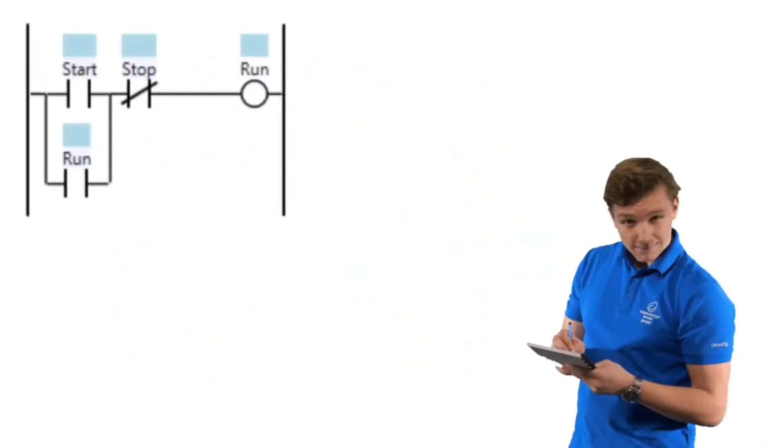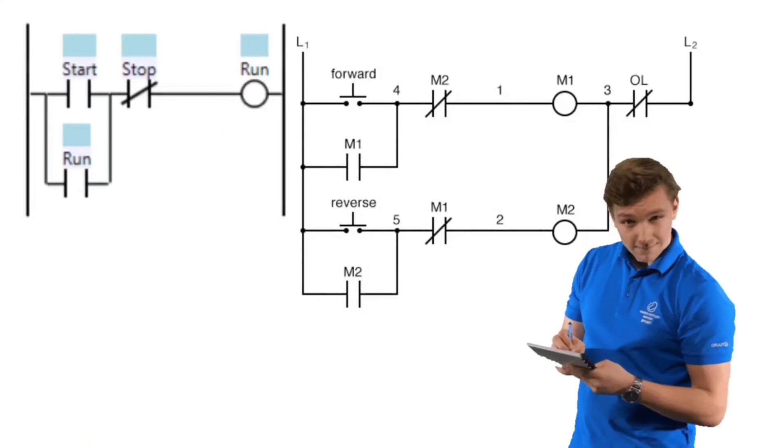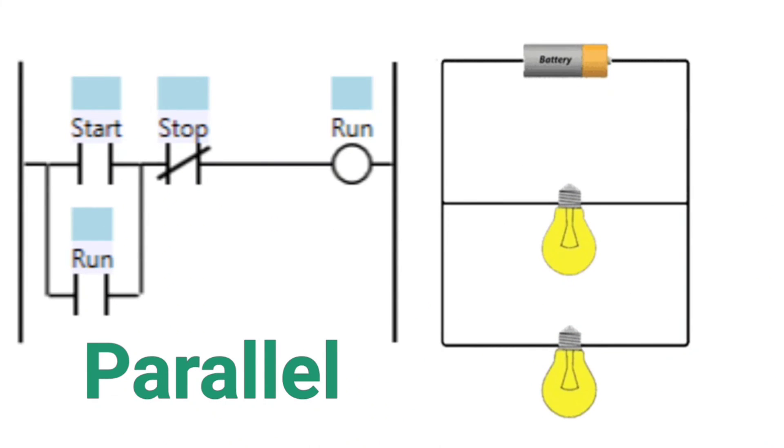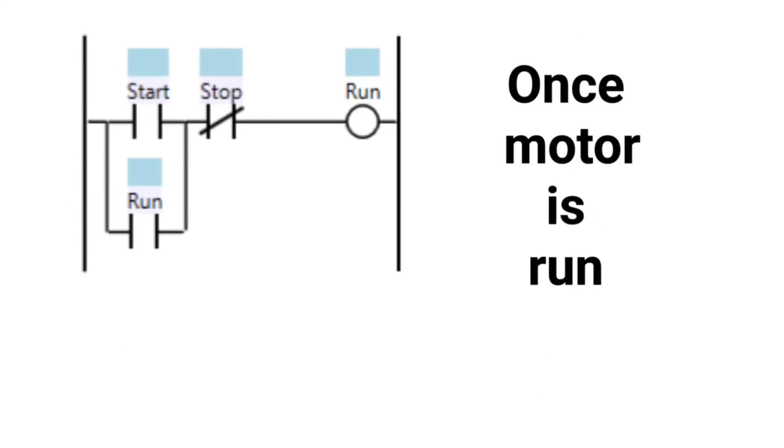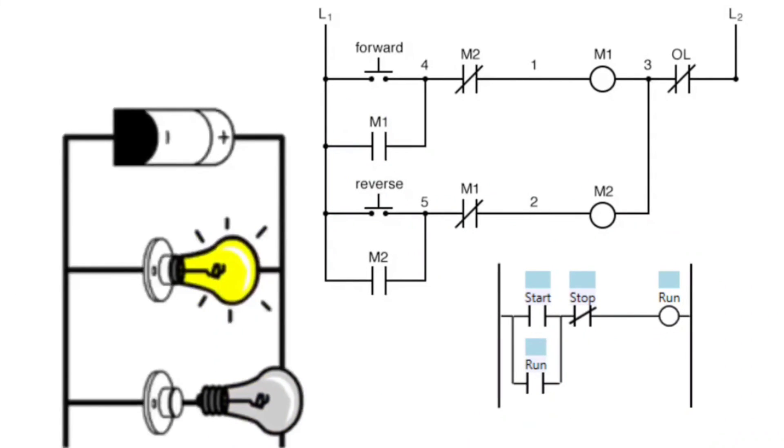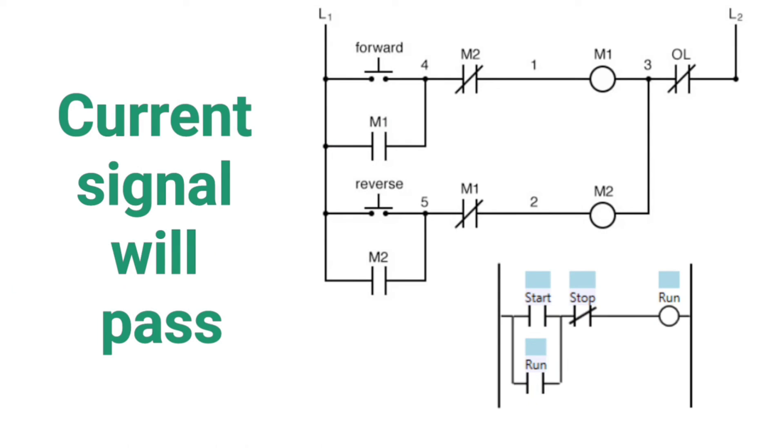Now let me explain the reason for using motor run output as input. You will click forward or start only once and you will leave it. But once the motor starts, it continues to run until the stop command is given. So for this, motor run output will be kept in parallel with forward mode or start mode. Parallel means on receiving any one signal, the flow of current starts. Once the motor is running, the signal will be on. If motor start or motor run signal is on, then the current will pass.